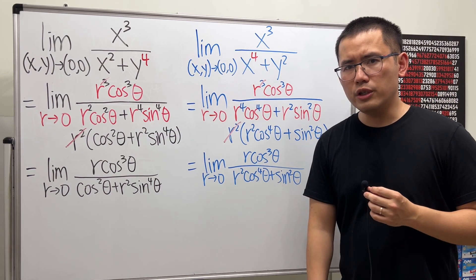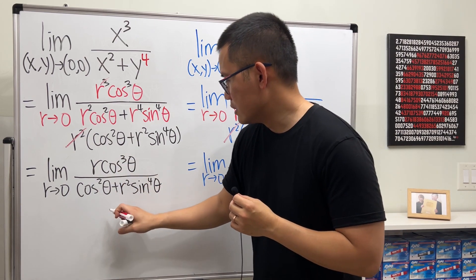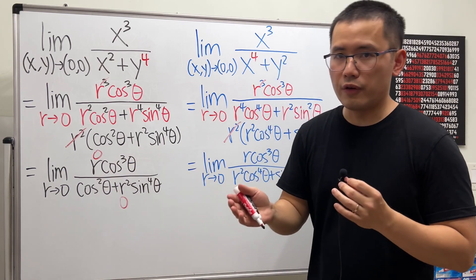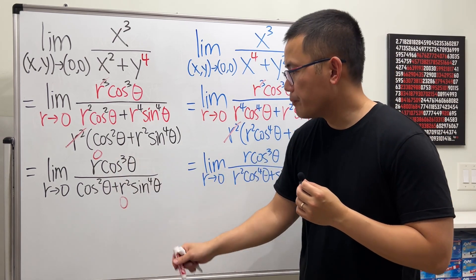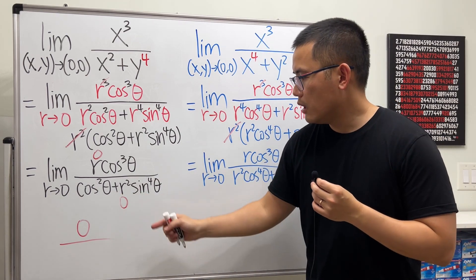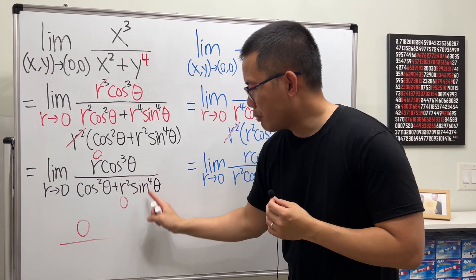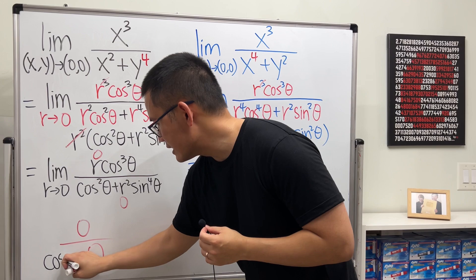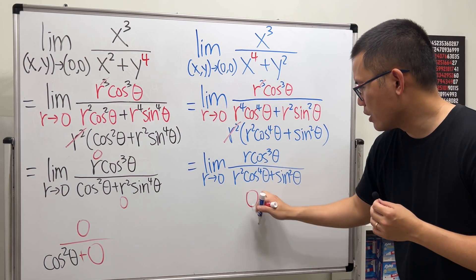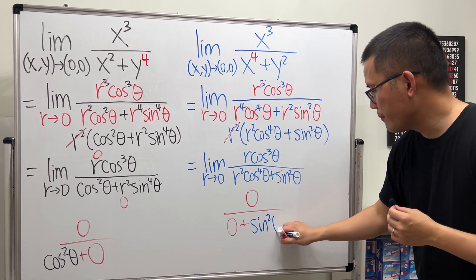It looks almost like the same situation. Last time, putting r = 0 gave zero times a bounded expression, which is zero. Here the numerator r·cos³θ goes to zero since cosine is between -1 and 1, and raising it to the third power keeps it bounded. So the numerator goes to zero.